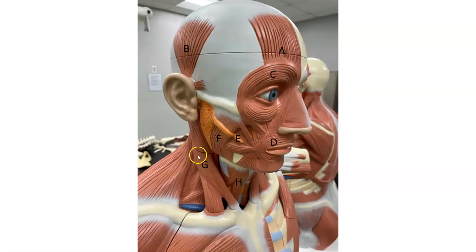Then G here is sternocleidomastoid. It attaches to the mastoid process on your skull, and then it attaches down here to your sternum as well as to your clavicle.